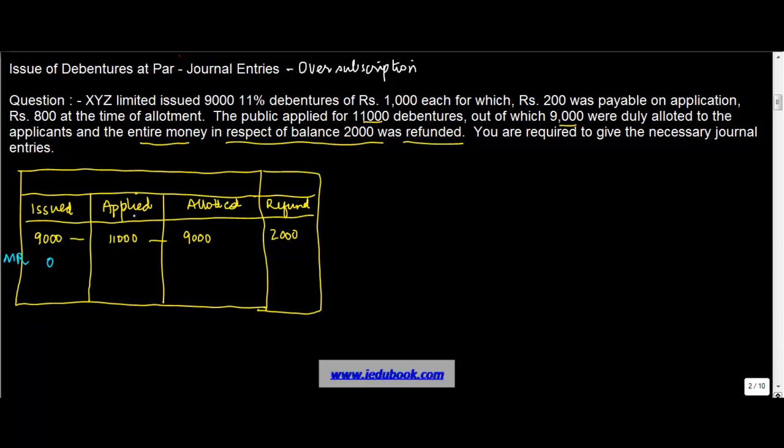When you applied, when people applied, the public applied, they applied for 11,000 debentures. So when they applied for 11,000 debentures, they would have paid the application money along with that. And how was the application money? The application money was 200, right? So the total money which they received at the time of application was 22 lakh.